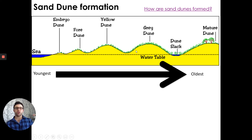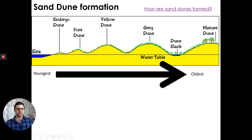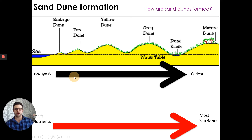More sediment is blown along, and as dunes get older they get larger. The embryo dune is slightly vegetated with a few small plants. As we build to our foredune, we see more plant species growing — usually things like marram grass — which anchors the sand and creates larger dunes.